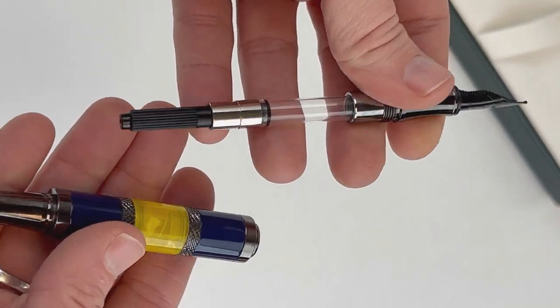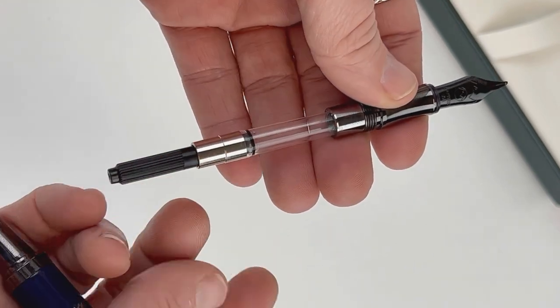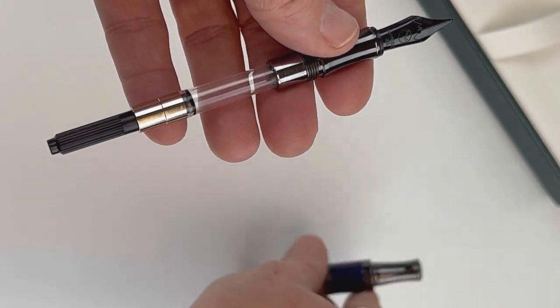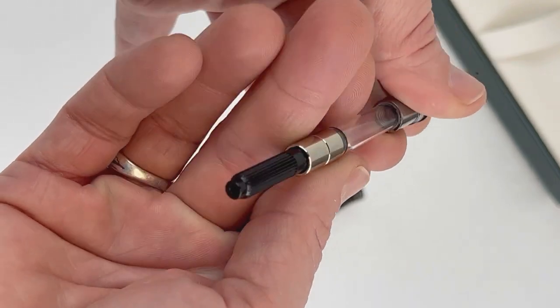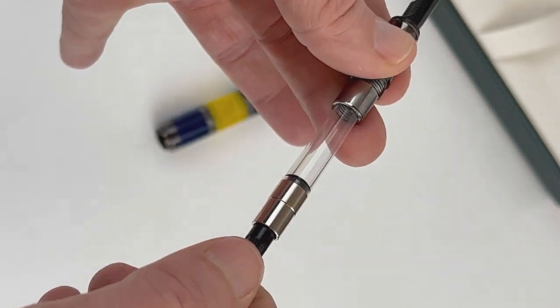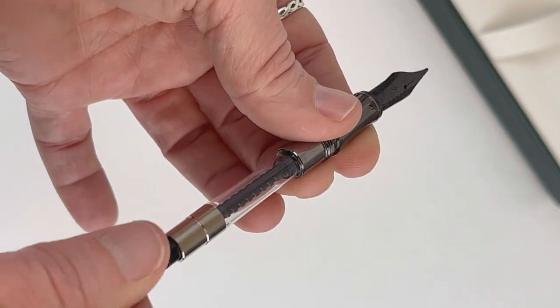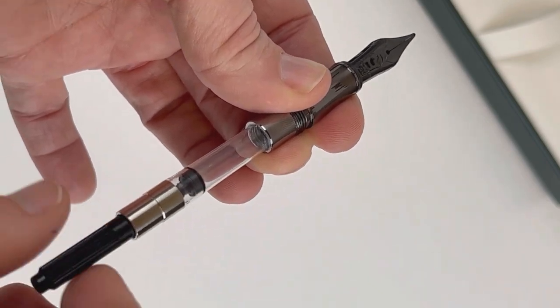To access the inside of the pen, you go ahead and unscrew the barrel, and that's where you can see the converter that's already installed when you purchase your pen, and you use that converter if you want to fill the pen with fountain pen-safe bottled inks.